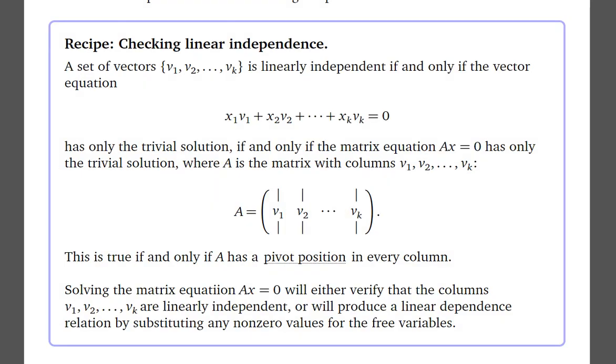The definition of linear independence applies to a set of vectors v₁, v₂, up through vₖ. That set is linearly independent if and only if the vector equation — where scalar x₁ times vector v₁ plus scalar x₂ times vector v₂, and so on, these are vectors and the xᵢ's are scalars — is equal to the zero vector.